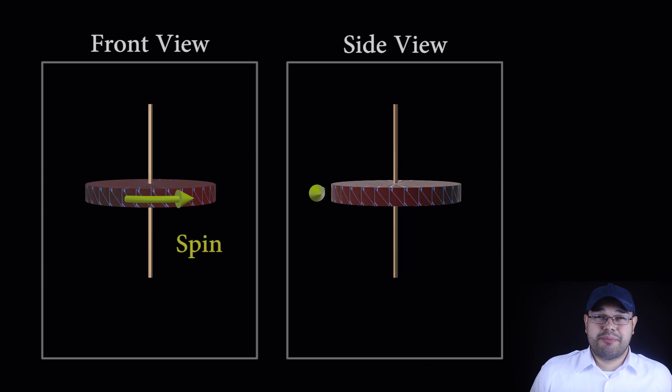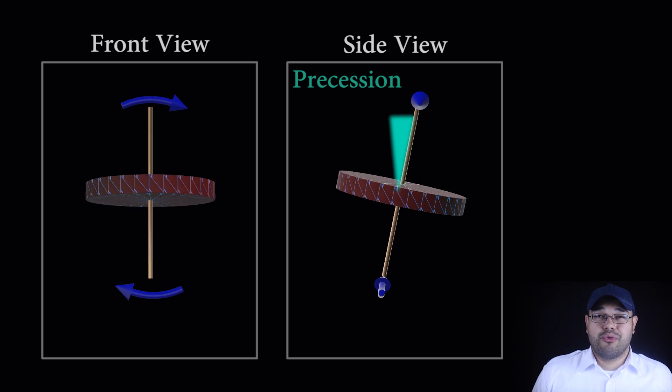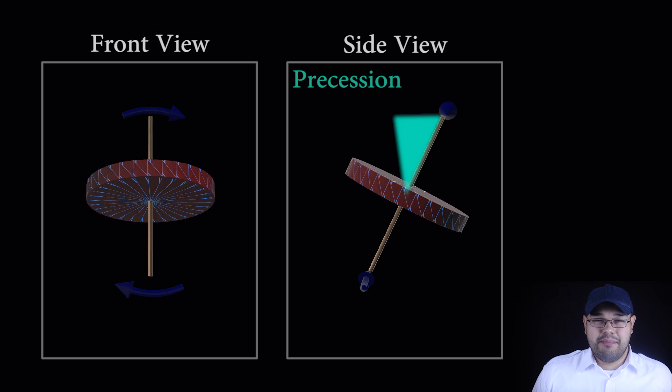For example, if we have a horizontal gyro that is spinning left about its yaw axis and we try to make it roll right, it will instead pitch forward.